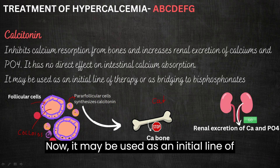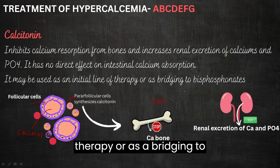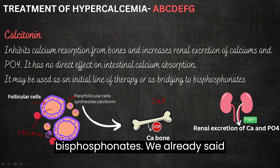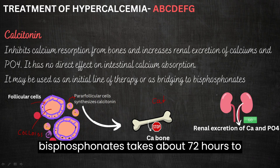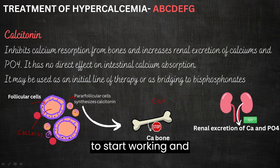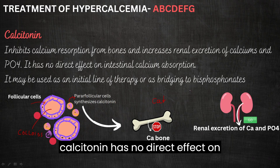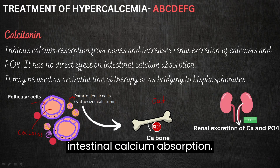Calcitonin may be used as an initial line of therapy or as a bridge into bisphosphonates, since bisphosphonates take about 72 hours to start working. Calcitonin has no direct effect on intestinal calcium absorption.